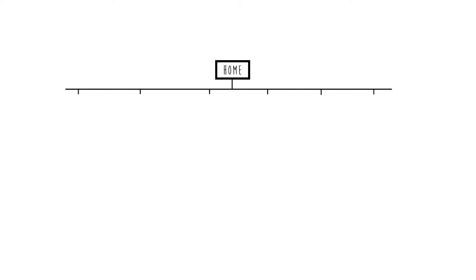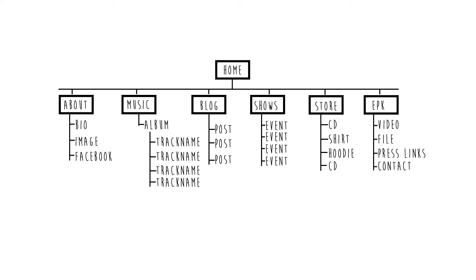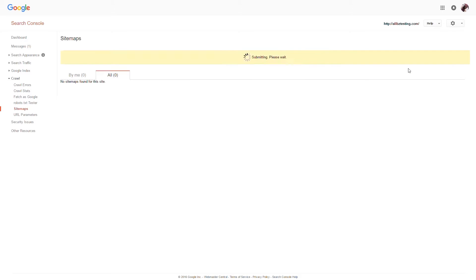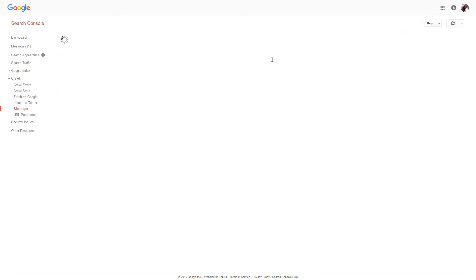Your sitemaps are what Google uses to read your website and understand what your pages and content are about. We have tools here that allow you to submit your sitemaps to Google in only a few clicks, and it's a great step to take to ensure that your site is indexed with accurate information. If you haven't seen our video covering this process, you can check it out with the link in the description of this video.